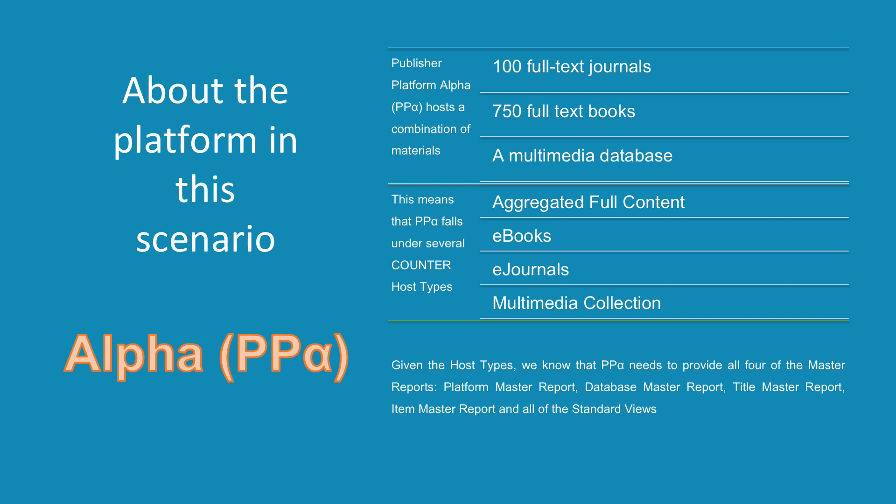Given the host types, we know that Alpha needs to provide all four of the master reports: the Platform Master Report, the Database Master Report, the Title Master Report, and the Item Master Report. And, of course, all of the standard views. Foundation Class 2 explains the reports and standard views in detail.